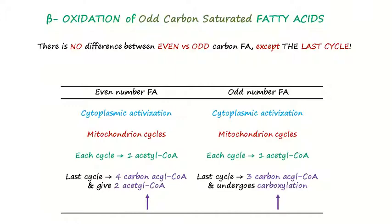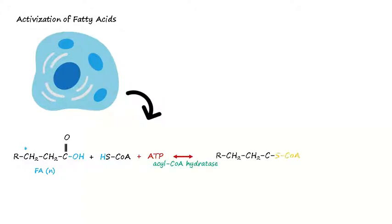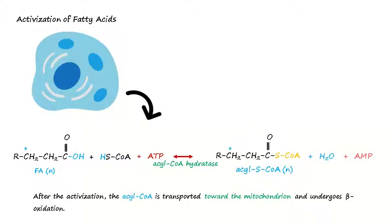The first step is the activation of the fatty acid. The fatty acid will interact with coenzyme A and will charge adenosine triphosphate macroergic compound. The product will be acyl-CoA with a specific number of carbons. After the activation, the acyl-CoA will be transported toward the mitochondrion to undergo oxidation. The process occurs in cytoplasm and charges two macroergic compounds.